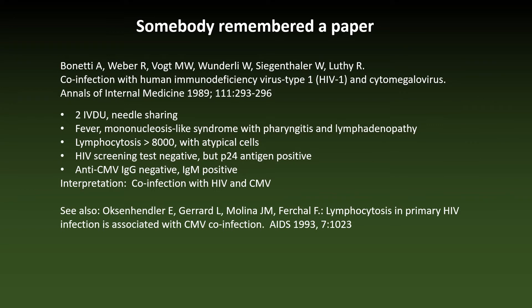While we were still scratching our heads in search of an explanation, somebody remembered an old paper describing two IV drug users with a mononucleosis-like syndrome with pharyngitis and enlarged lymph nodes, excessive lymphocytosis of more than 8,000, a positive P24 antigen but no HIV antibodies, and isolated IgM anti-CMV antibodies. The authors hypothesized co-infection by HIV and CMV — a hypothesis confirmed by a small series in a subsequent paper titled 'Lymphocytosis in primary HIV infection is associated with CMV co-infection.'